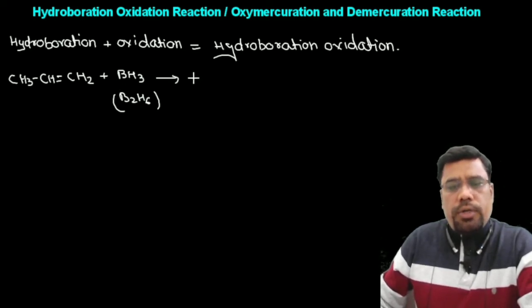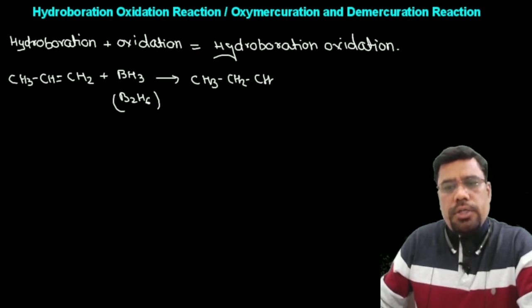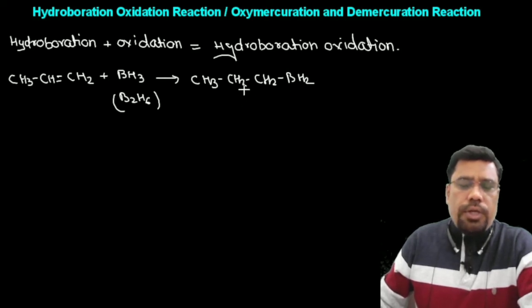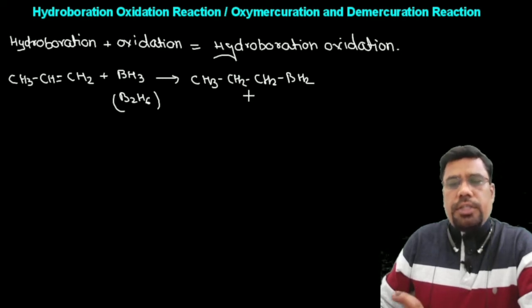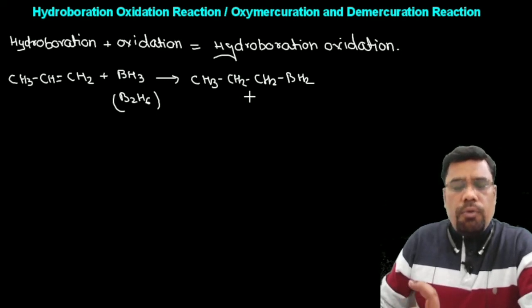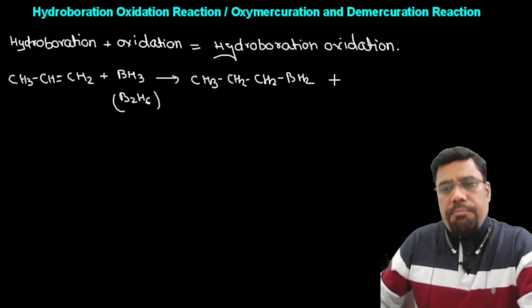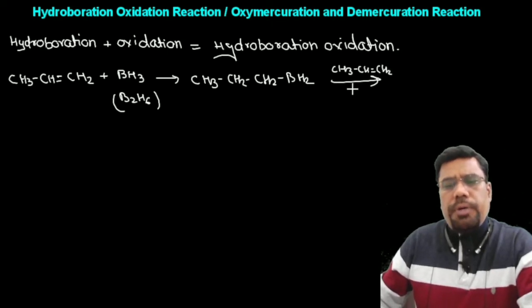जब BH3 को propene में जोड़ेंगे तो CH3-CH2 single bond CH2 और single bond BH2 बनेगा। Boron एक carbon पर जुड़ेगा और hydrogen दूसरे carbon पर। यह addition anti-Markovnikov है — hydride का मतलब है यह Markovnikov के विरुद्ध apply हुआ। इसके बाद हम दुबारा propene डाल देंगे।